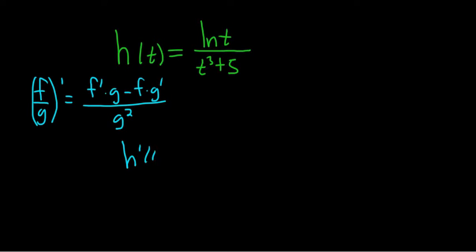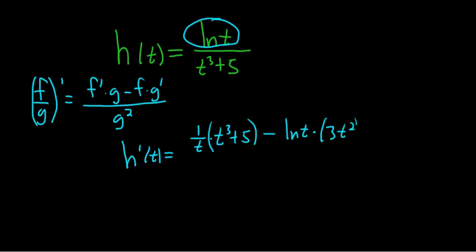So in this case, it's the derivative of the top. So the derivative of the top piece is 1 over t times the bottom, so t cubed plus 5, minus the top, so ln t, times the derivative of the bottom piece, so 3t squared, all over the bottom one squared, so t cubed plus 5 squared.